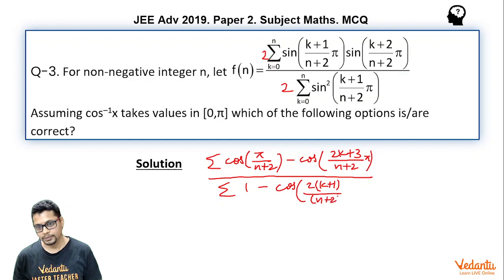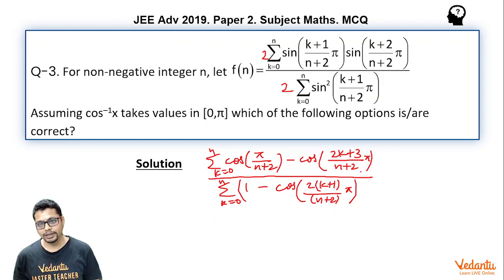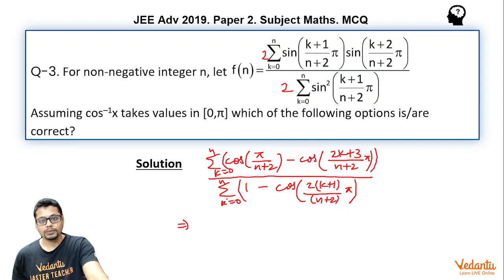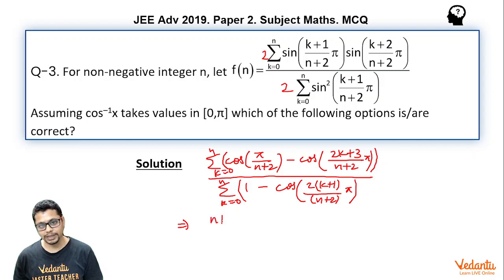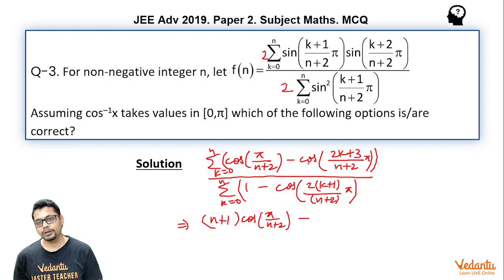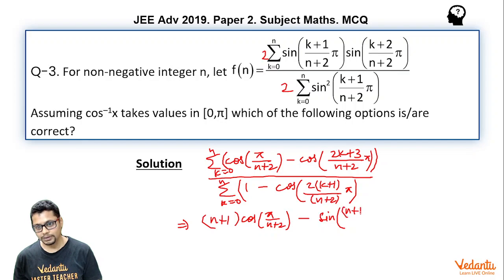This whole summation has k varying from 0 to n, and so does the denominator. In the numerator, cos(π/(n+2)) is not varying with k, so it adds n+1 times and becomes (n+1)·cos(π/(n+2)) minus a cosine series with angles in AP, where the common difference is 2π/(n+2), so common difference by 2 is π/(n+2).